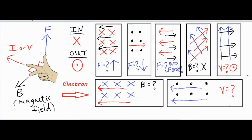For the last two examples involving an electron — a negative charge — there are two methods. You can use the right-hand rule with your left hand for a negative charge, or you can use the right-hand rule and just reverse your answer. Since I'm already in the flow of using my right hand, I'll reverse the answer. I'll make a note: 'reverse direction.'